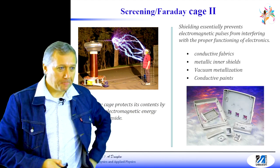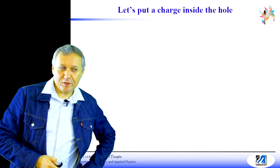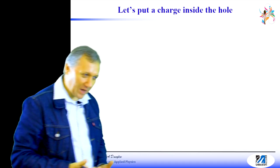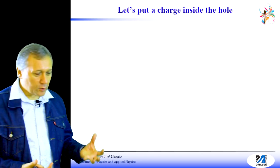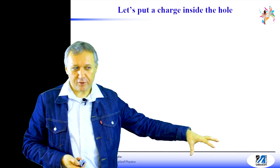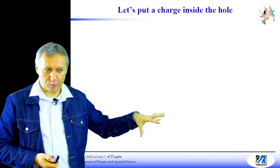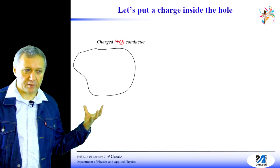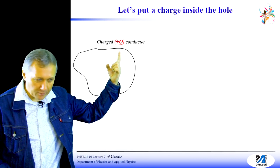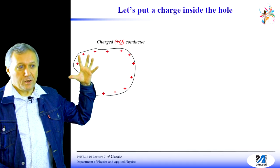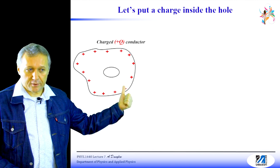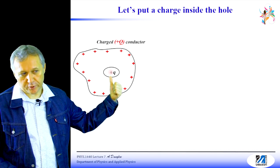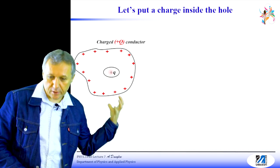Now let's make the situation even slightly more complicated. We made a hole inside of our conductor. Now let's position a point charge inside of that void, inside of that hole. Again, let's assume we have a piece of a conductor, positively charged. There is a hole, and inside of the hole, let's put a positive charge plus Q.